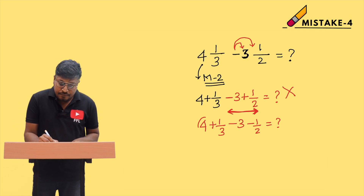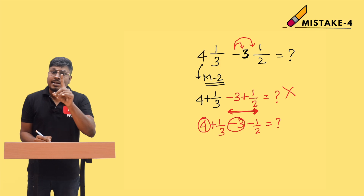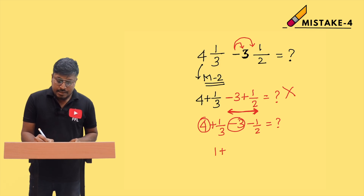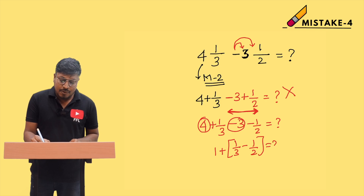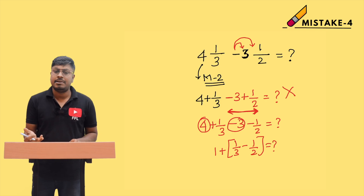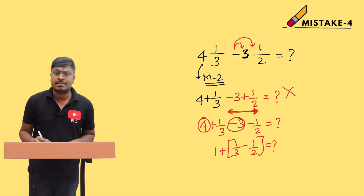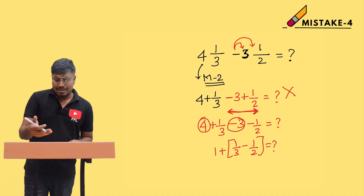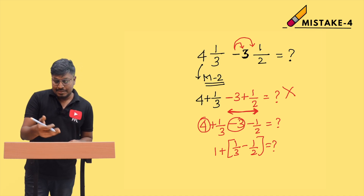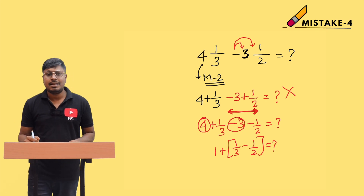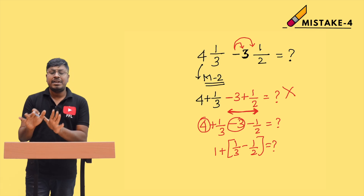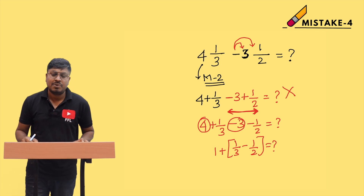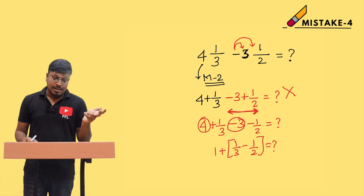After correctly separating, take the integers: 4 minus 3 equals 1. Then handle the fraction part: 1/3 minus 1/2. Take LCM as 6, solve it to get 1/6. So the answer is 1 plus 1/6, which gives 7/6. That is the final answer for this question.